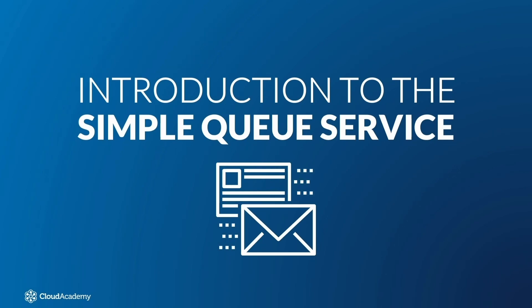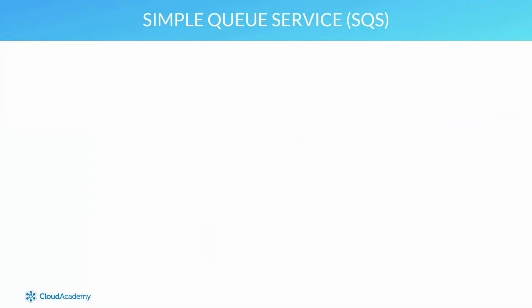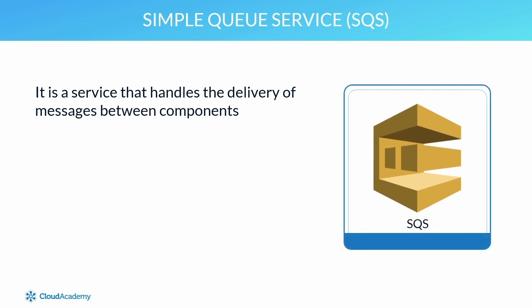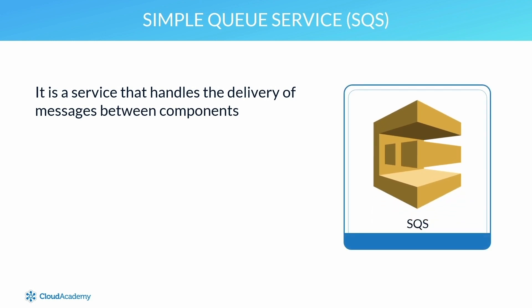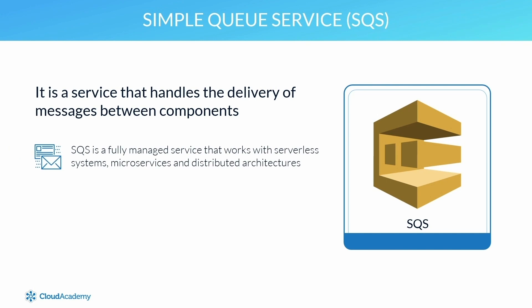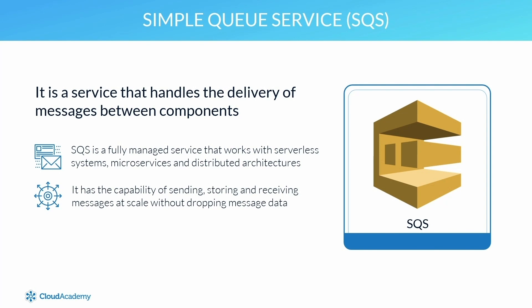With the continuing growth of microservices and the cloud best practice of designing decoupled systems, it's imperative that developers have the ability to utilize a service or system that handles the delivery of messages between components — and this is where SQS comes in. SQS is a fully managed service offered by AWS that works seamlessly with serverless systems, microservices and any distributed architecture. It has the capability of sending, storing and receiving messages at scale without dropping message data, as well as utilizing different queue types depending on requirements, and includes additional features such as dead letter queues.